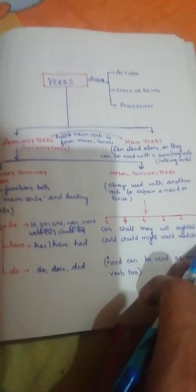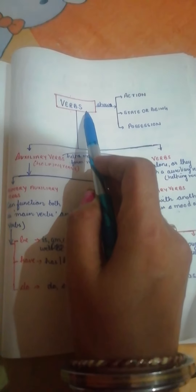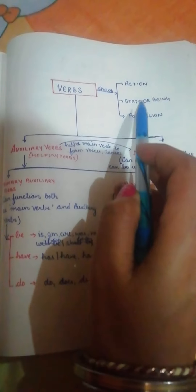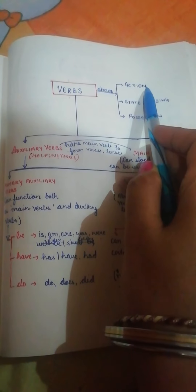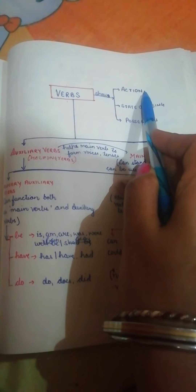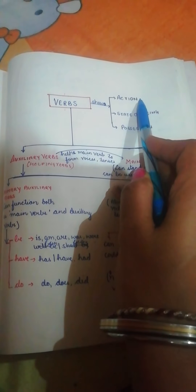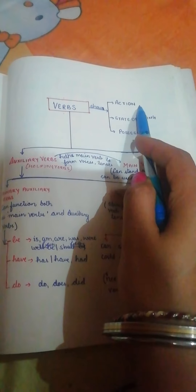Alright children, last time I gave you the flowchart. Now here's an explanation of it. We are dealing with the topic: verbs. Verbs are that part of speech which shows action, state, being, or possession. When I talk about action, this can be a concrete action, a mental action, or a feeling. For example, 'I think' — think is something going on inside; you cannot show it. That kind of action is the mental action.